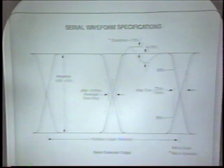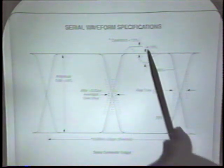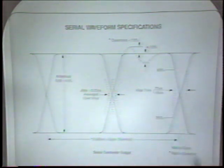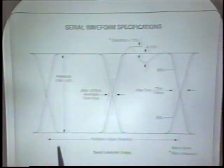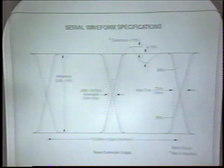Specifications not in the standard include overshoot, which in our generators we try to keep below plus or minus 10%, and the period between clock cycles, which is basically due to the television signal and its accuracy coming from the original plus or minus 10 hertz on the 3.58.